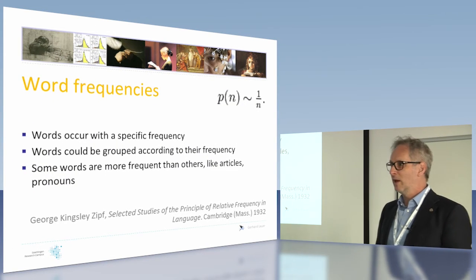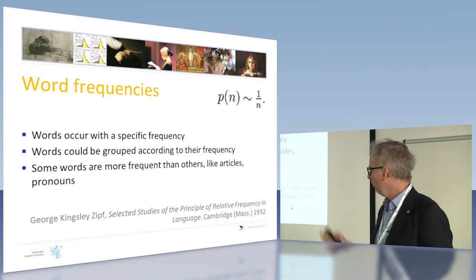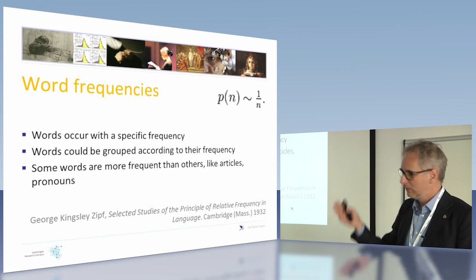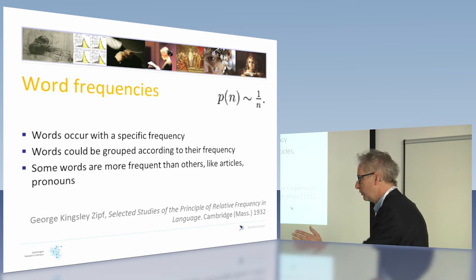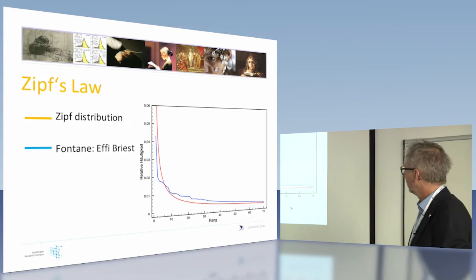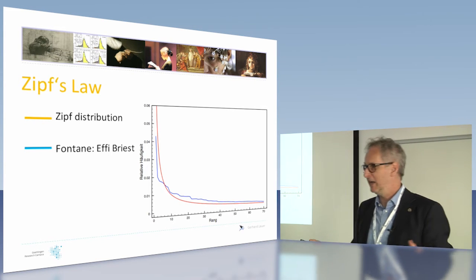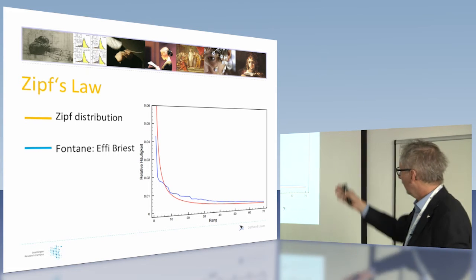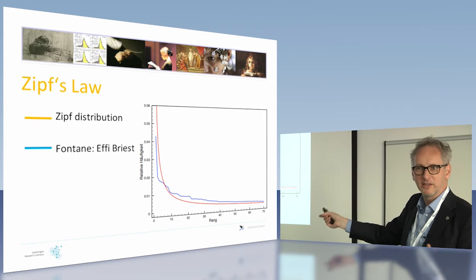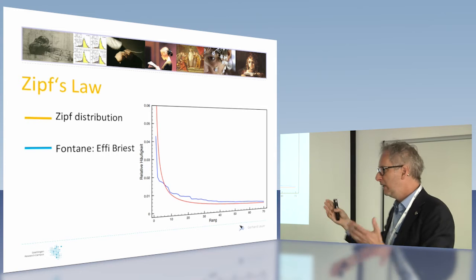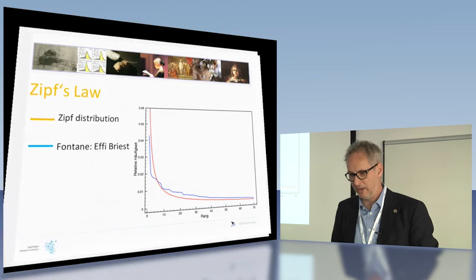Another thing: we use words with a specific frequency, and you can describe this with a law called the Zipf law. On one hand you have the most used words, and then it goes down to words used only once, giving you a curve like that. If you compare it to a novel written by Fontane — the German Anna Karenina — you get nearly the same curve. Some words, especially articles and things like that, are used very frequently, and many words are used only once. You can get specific curves and compare texts this way.